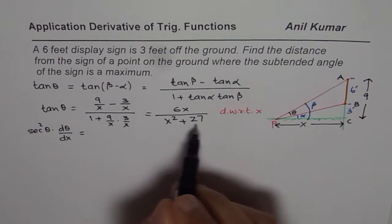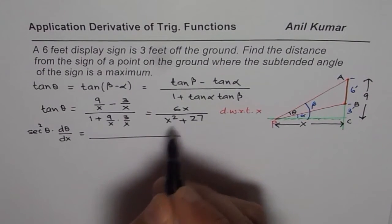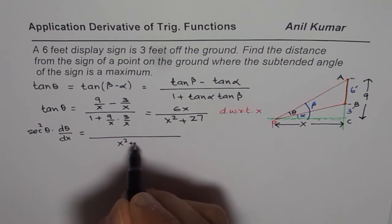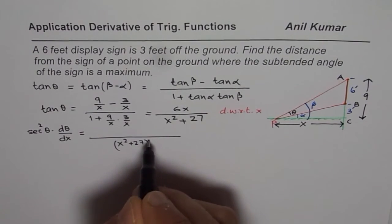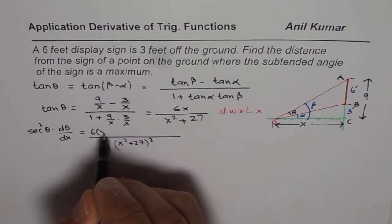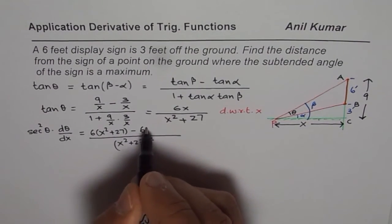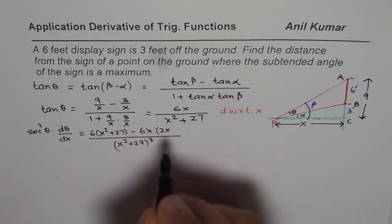Equals 2. Here we will apply the quotient rule. So we have denominator as X square plus 27 whole square. Derivative of 6X is 6. 6 times X square plus 27 minus 6X times derivative of denominator, which is 2X, right?